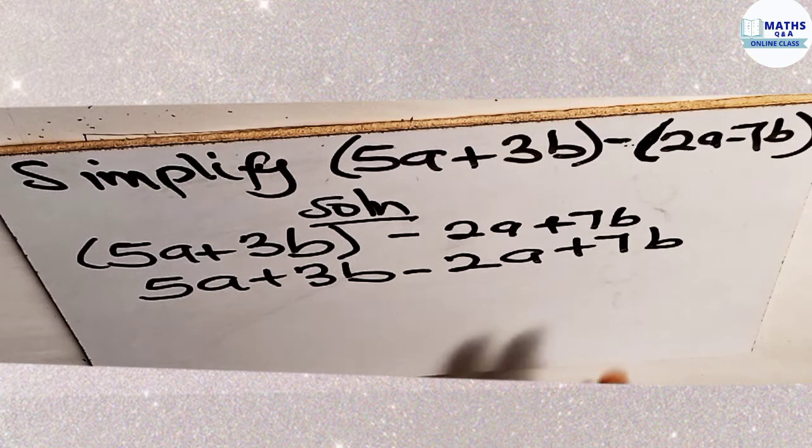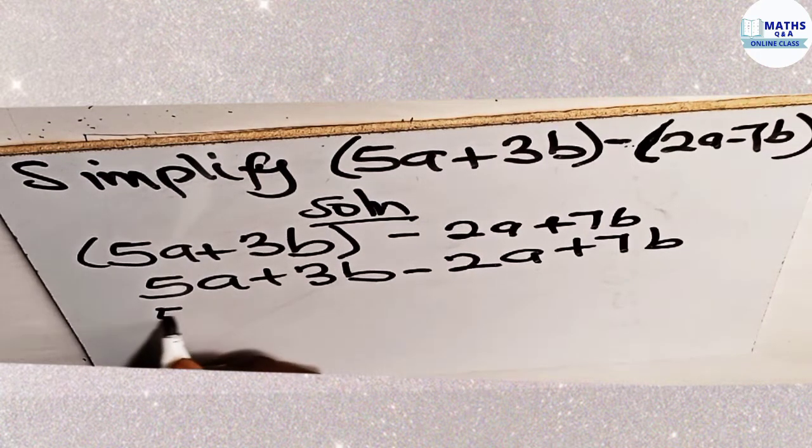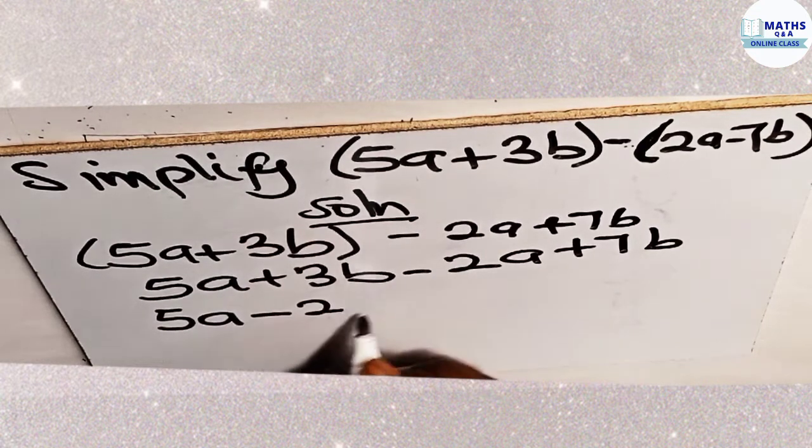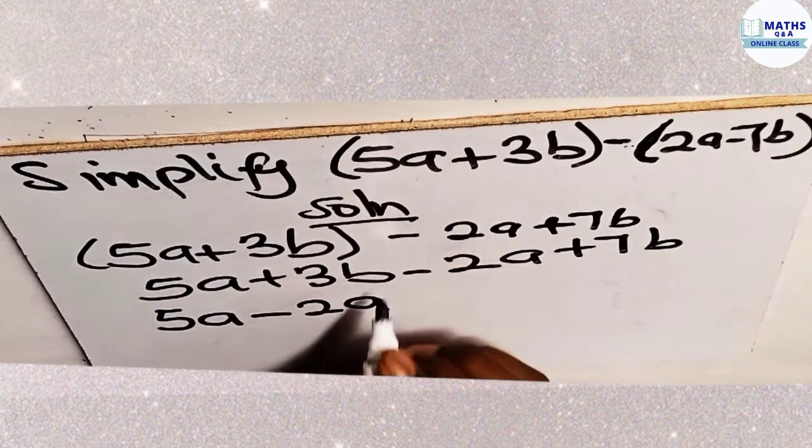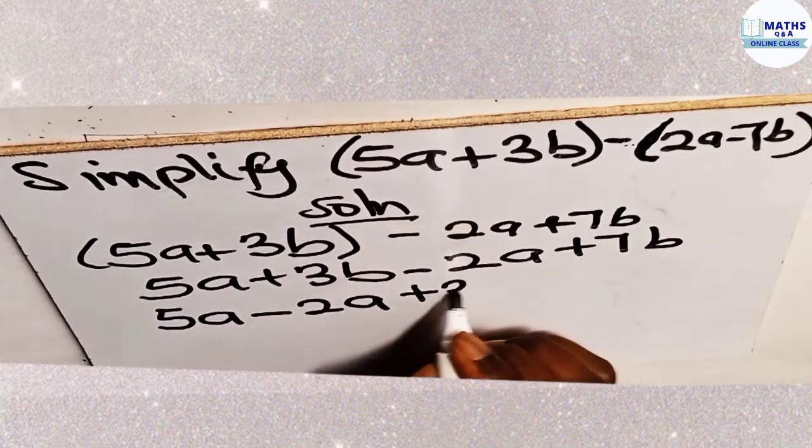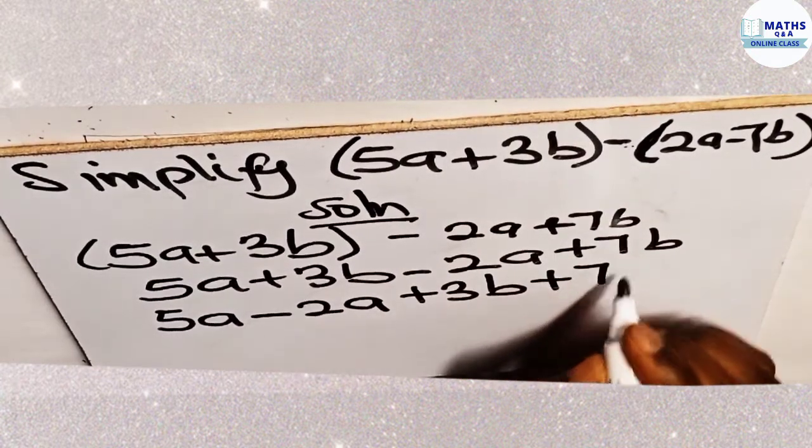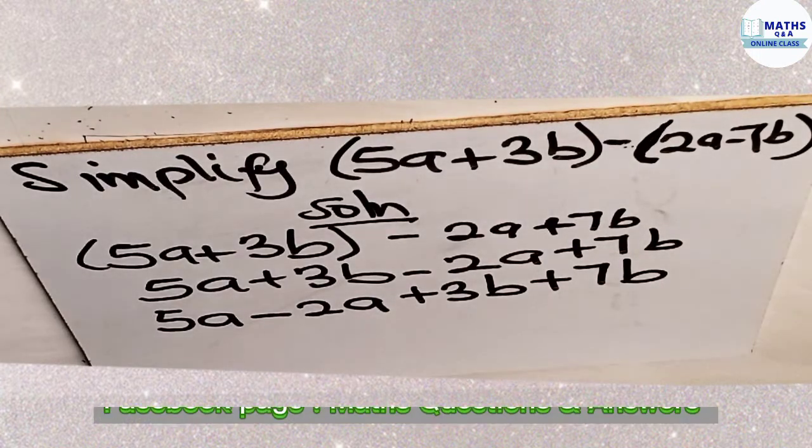When you are done, now you group like terms. So we have 5a. We also have negative 2a. And then we have positive 3b. And we have positive 7b. So these are the terms that are alike.